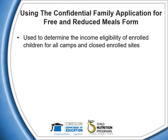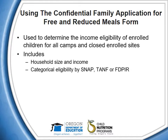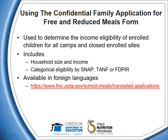The confidential family application for free and reduced price meals is used to determine the income eligibility of enrolled children for all camps, residential and non-residential. The information collected includes household size and income, or the case number for benefits received under SNAP, TANF, or FDPIR. If one child in the household is receiving SNAP, FDPIR, or TANF benefits, all other children in the household are categorically eligible to participate in SFSP. If a sponsor requires a form in a foreign language, translated applications for the National School Lunch Program may be used to determine individual income eligibility in the SFSP. Translated forms for the NSLP are available online at the link on this slide.